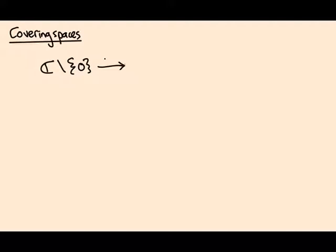The map p(z) = z² takes a complex number and squares it. What do we know about this map? Well, it's surjective - every number has a square root.